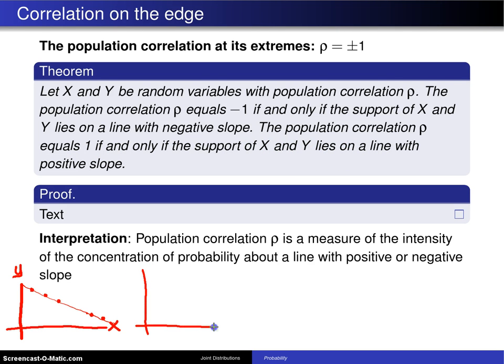So for that particular situation, here is x, here is y. If you have some points, maybe these three points right here, and all of the support lies on a line with positive slope, then rho is equal to 1. The proof of this is given in the textbook.